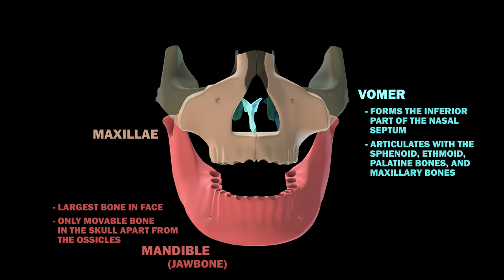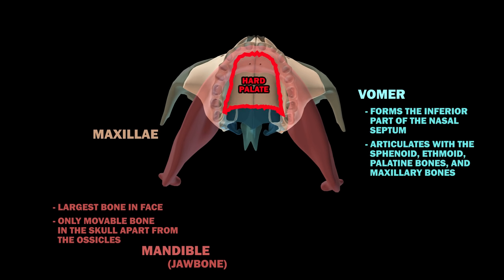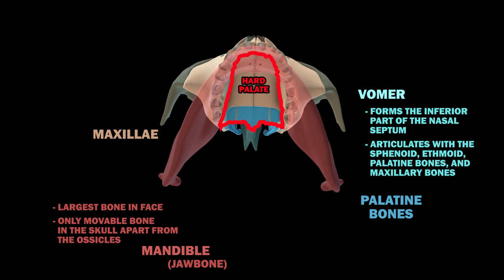A pair of maxillae are fused together at the intermaxillary suture to form the bone of the upper jaw. This includes the hard palate in the front of your mouth. The two palatine bones, together with the maxillae, comprise the hard palate and are located at the back of the nasal cavity.